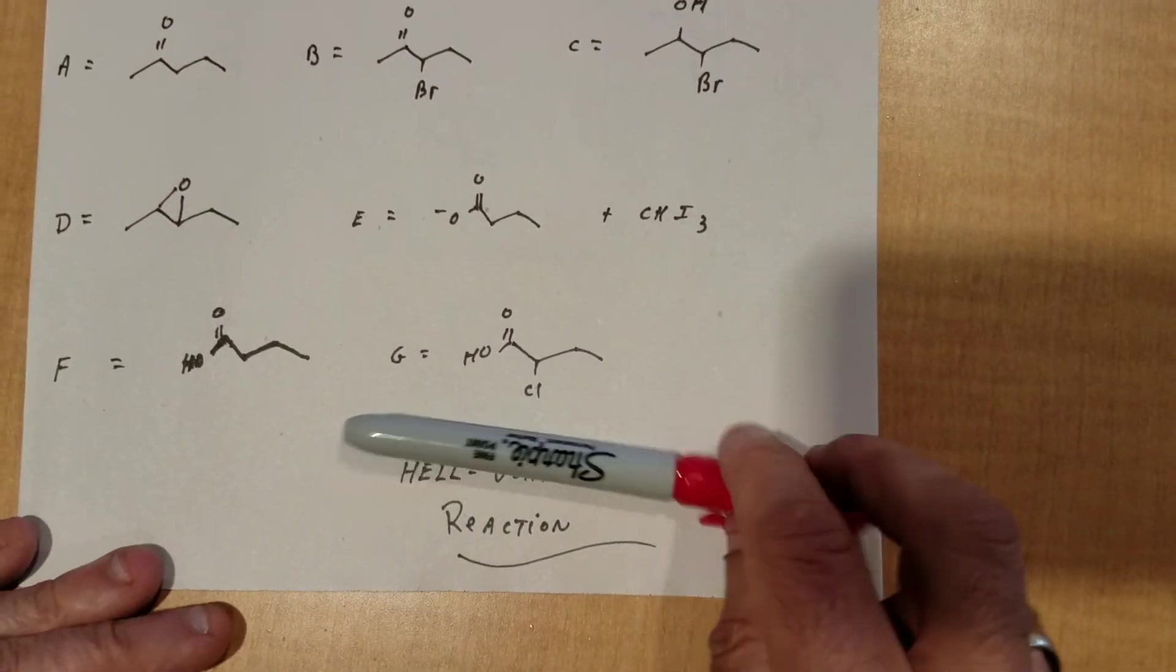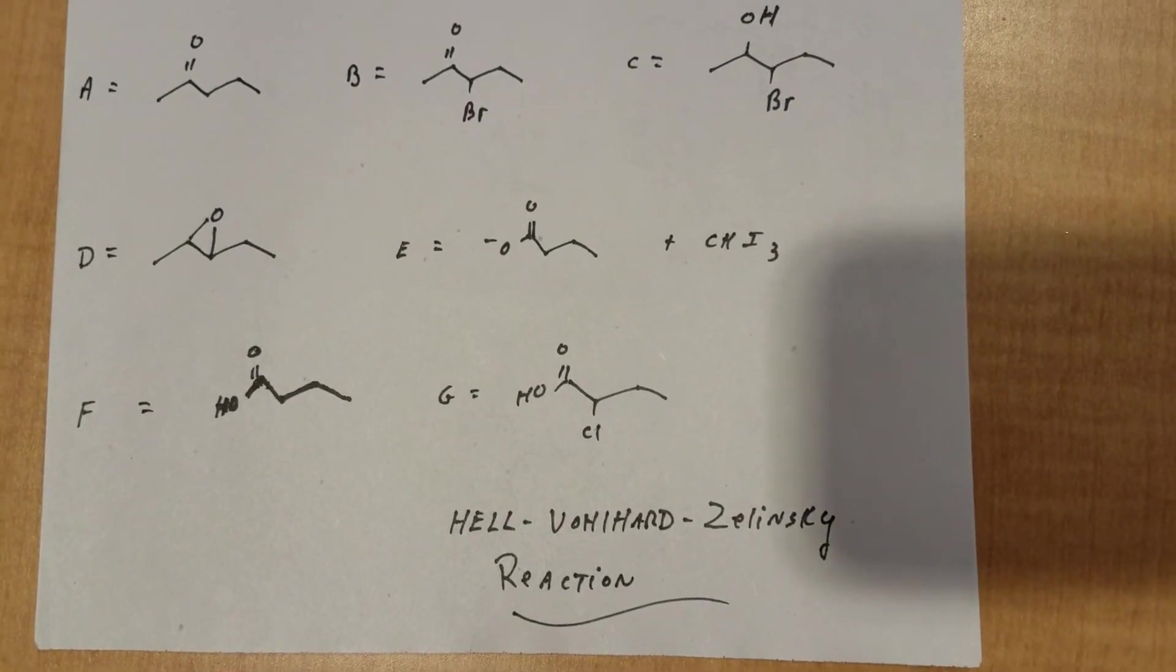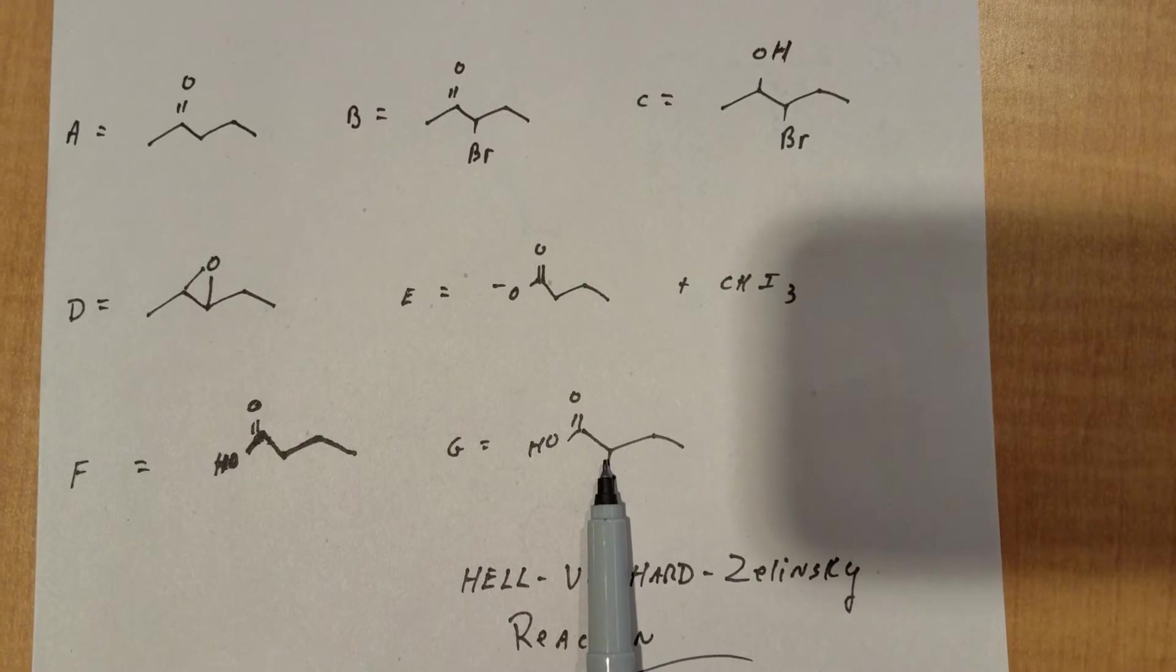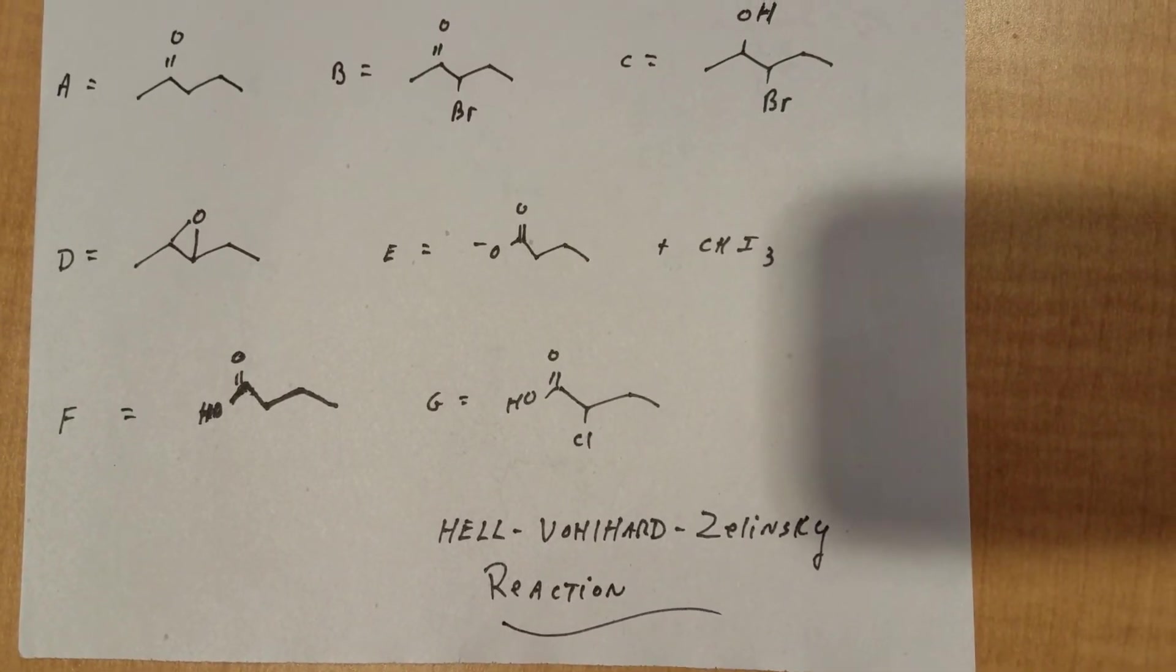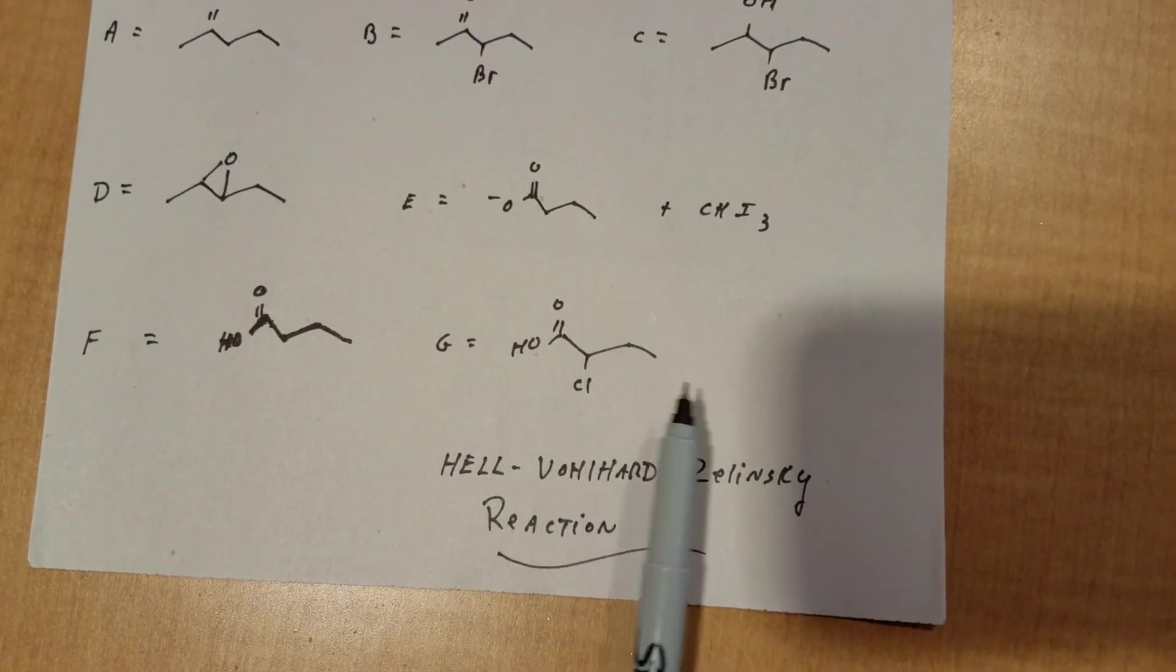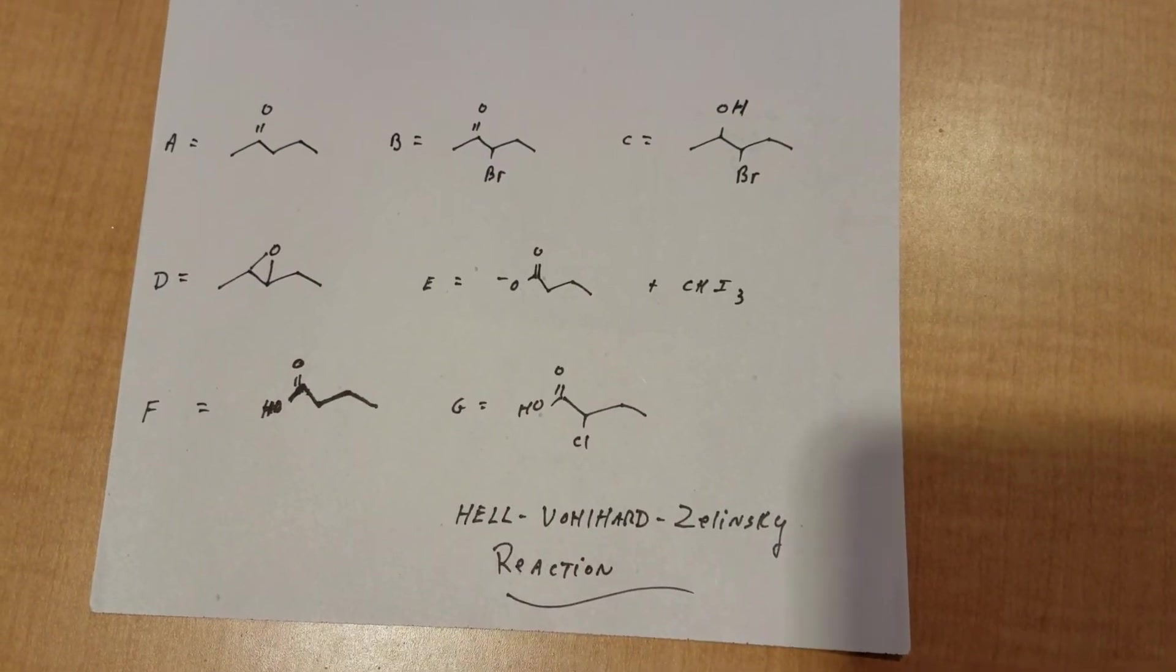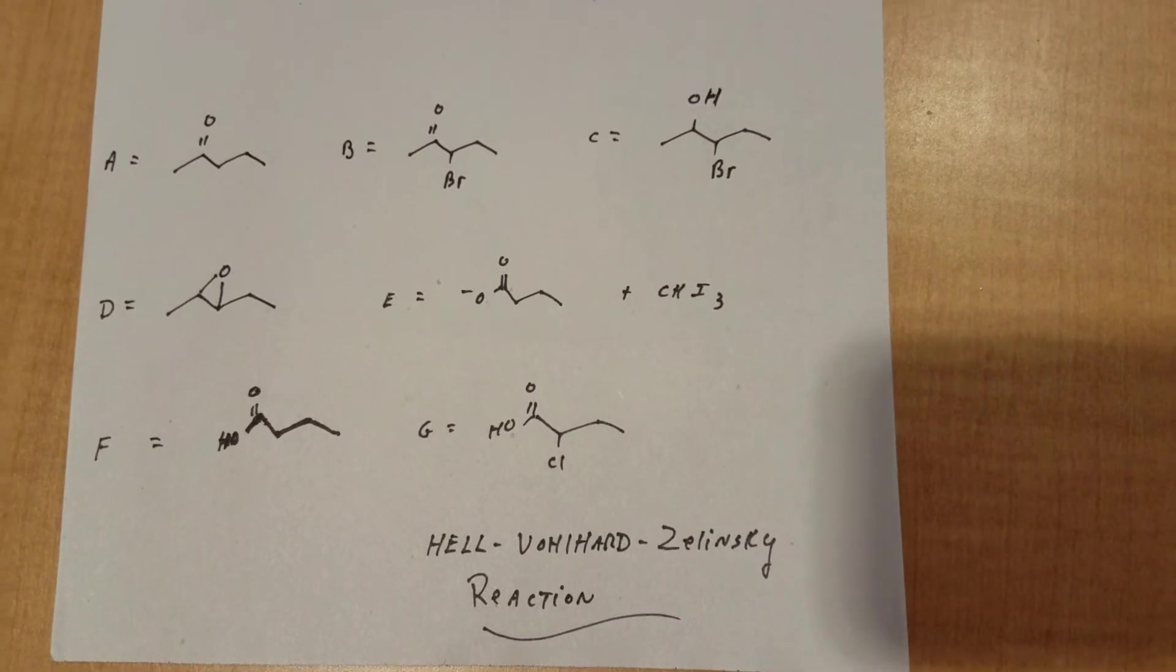And here's the hard one. This last step, if you add chlorine and catalytic PCL3 aqueous, you simply replace the alpha hydrogen on the acid with a chlorine atom. In this case, because I use chlorine. So you're replacing an alpha hydrogen with a halogen, and that is known as the Hell-Volhard-Zelinsky reaction. So I finish this off doing Hell-Volhard-Zelinsky.